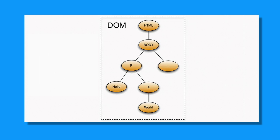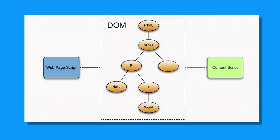With extensions, the DOM for a web page is shared between the page's JavaScript and each of the content scripts that is also interacting with that page. Any of the scripts can modify the DOM, for example by removing a node, and all the scripts will immediately see the change.